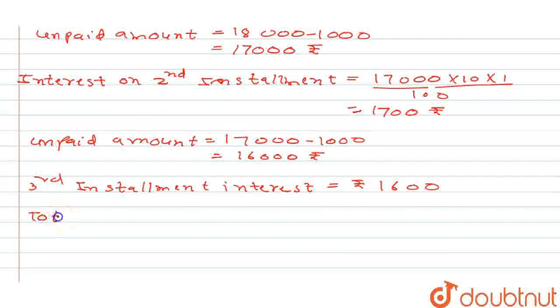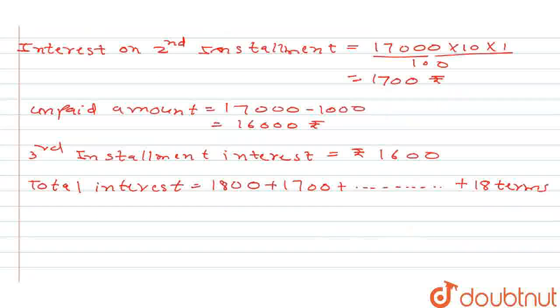So we can say total interest he is paying every year. It started from 1,800 then 1,700 then 1,600 till it's going to be 0. So that is 18 terms. We can see 1,800, 1,700, 1,600, like this 18 terms. So total terms N equals 18.